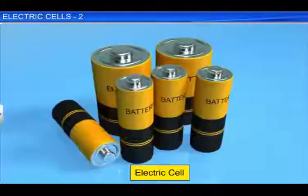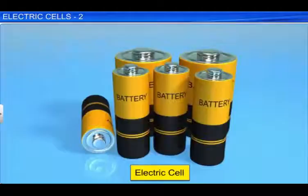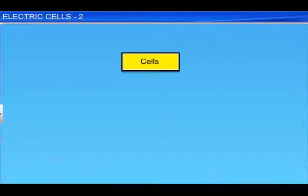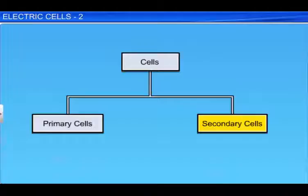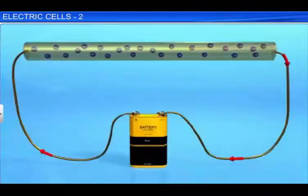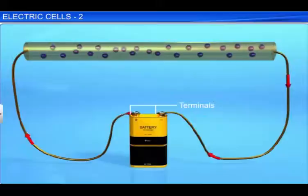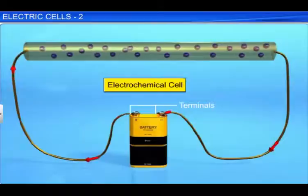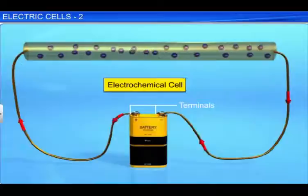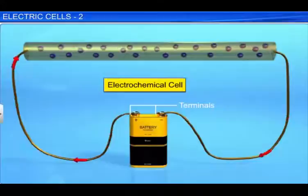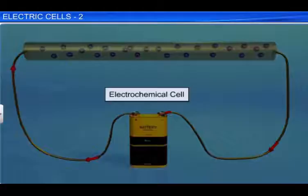You already know that the device that helps to maintain a constant potential difference across a conductor and hence a continuous flow of charge through it is called an electric cell. There are two types of cells: primary and secondary cells. When a conductor is connected to the terminals of an electric cell, the chemical reaction in the cell helps maintain the flow of charges through the conductor. Due to this reason, these are also referred to as electrochemical cells. The work done by a cell to drive a unit positive charge in a closed circuit is called electromotive force, or EMF. Thus, an electrochemical cell is defined as a device that converts chemical energy into electrical energy.